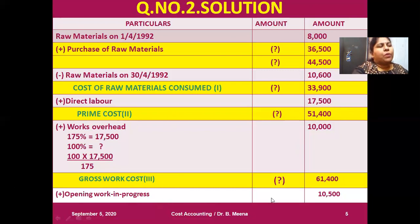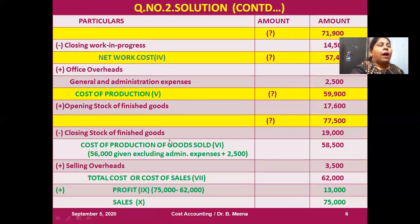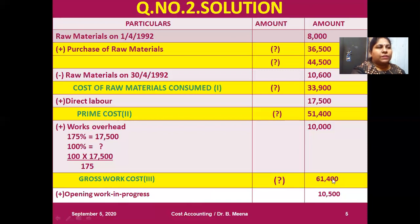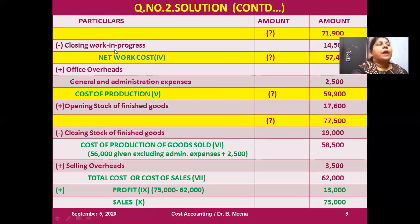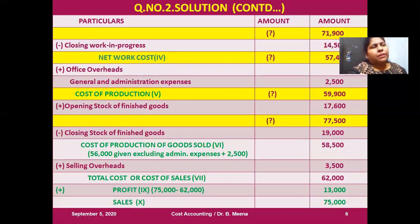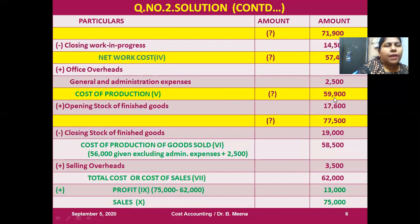Gross work cost is also unknown — I put a question mark. After adding opening work in progress with gross work cost, I will get one summation — that also gets a question mark. Minus closing work in progress, given in the problem as 14,500. Next is net work cost as the resulting answer — also a question mark. Plus office overhead — the office overhead is given in the problem as general and administration expenses. After adding general administration expenses, the resulting answer is cost of production: 59,900. That is not available in the problem. Opening stock of finished goods is given, so after adding opening stock I get a summation — also unknown. Minus closing stock of finished goods is given in the problem.